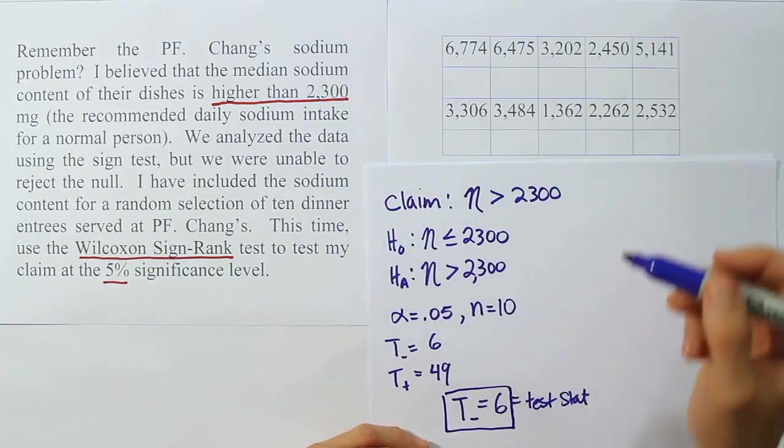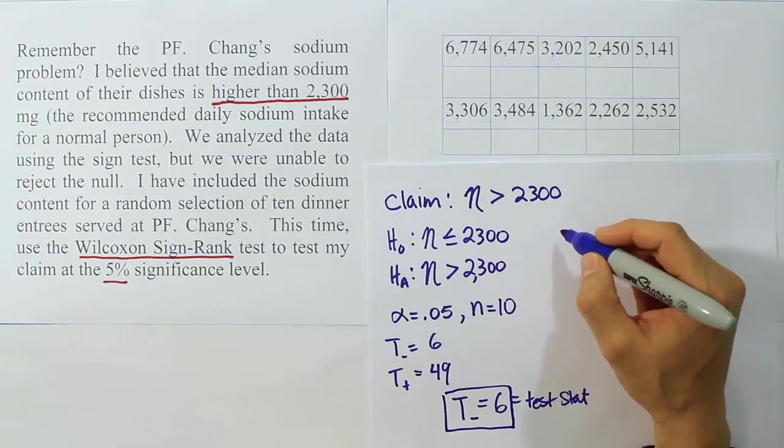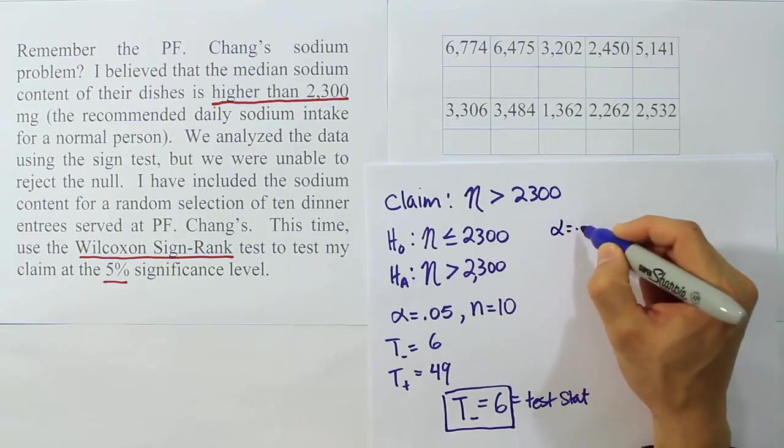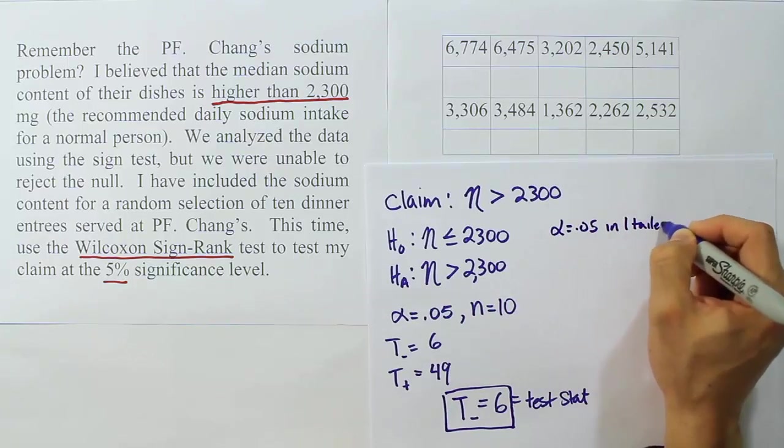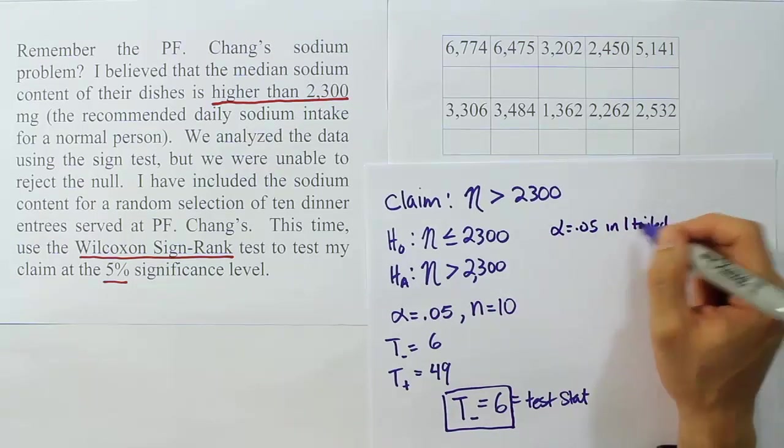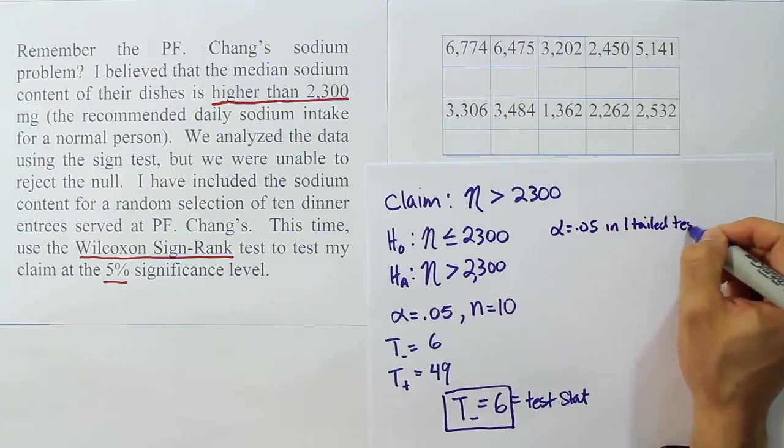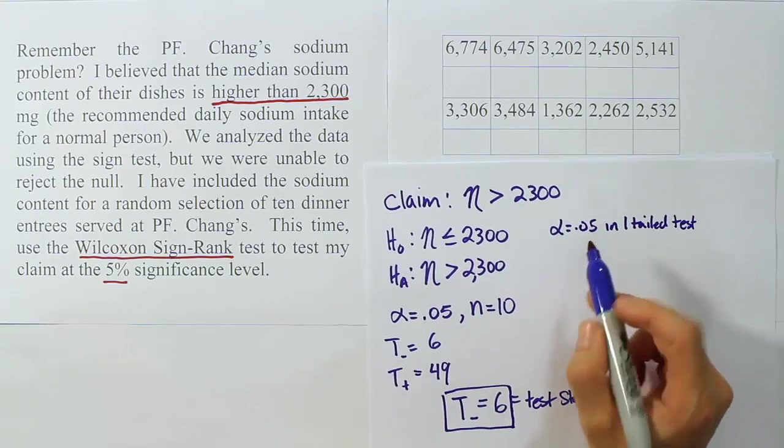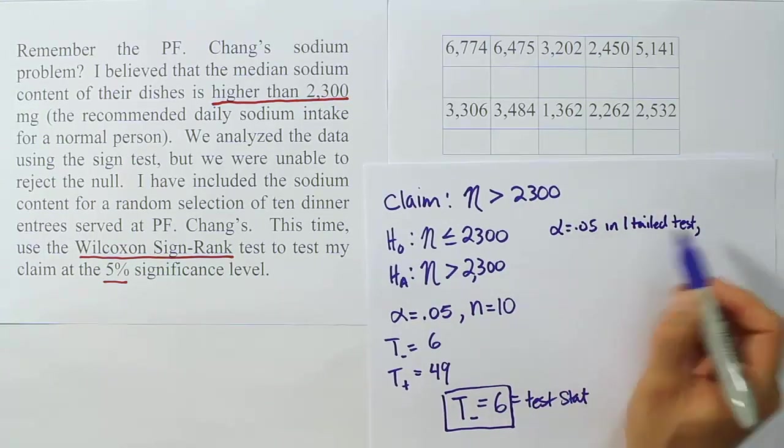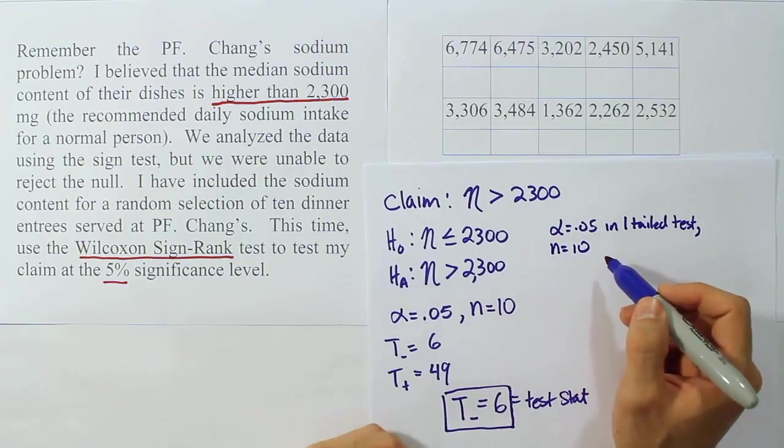Next step is to get our critical value. So to get our critical value, we're going to go to our table. We're going to look up certain values. We're going to go to α equals 0.05 in one tail. It's a one-tailed test because in a one-tailed test, because this is greater than, it's a one-tailed test. So 0.05, then we're going to look up n equals 10 as well. And that will help us get our critical value. So let's go do that now.